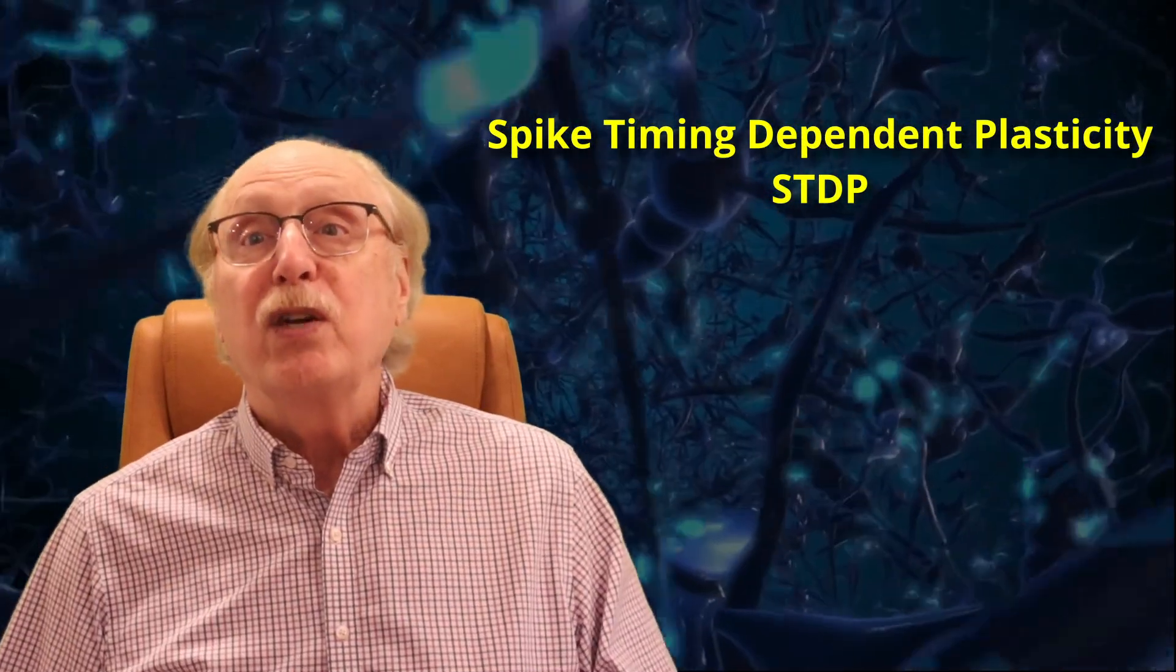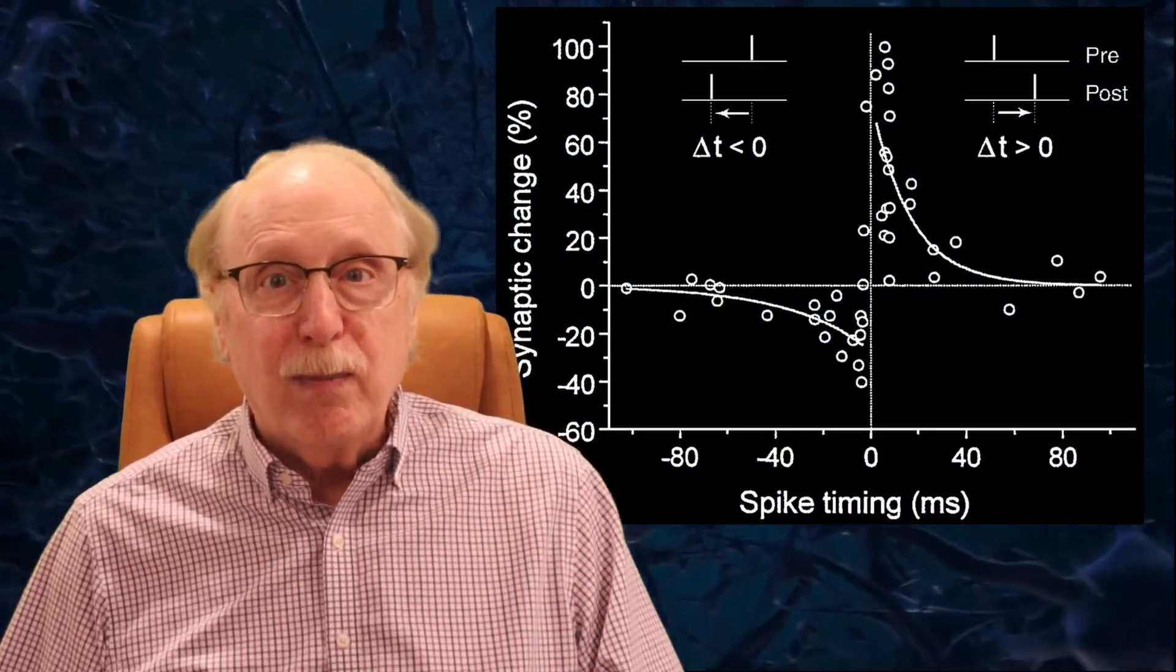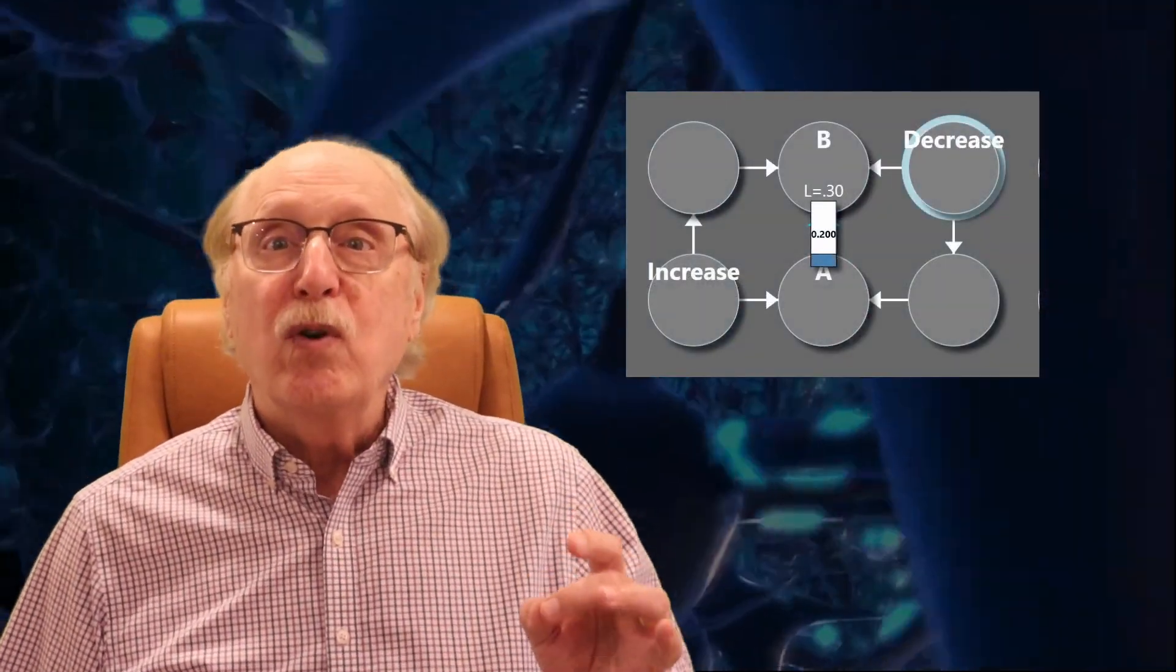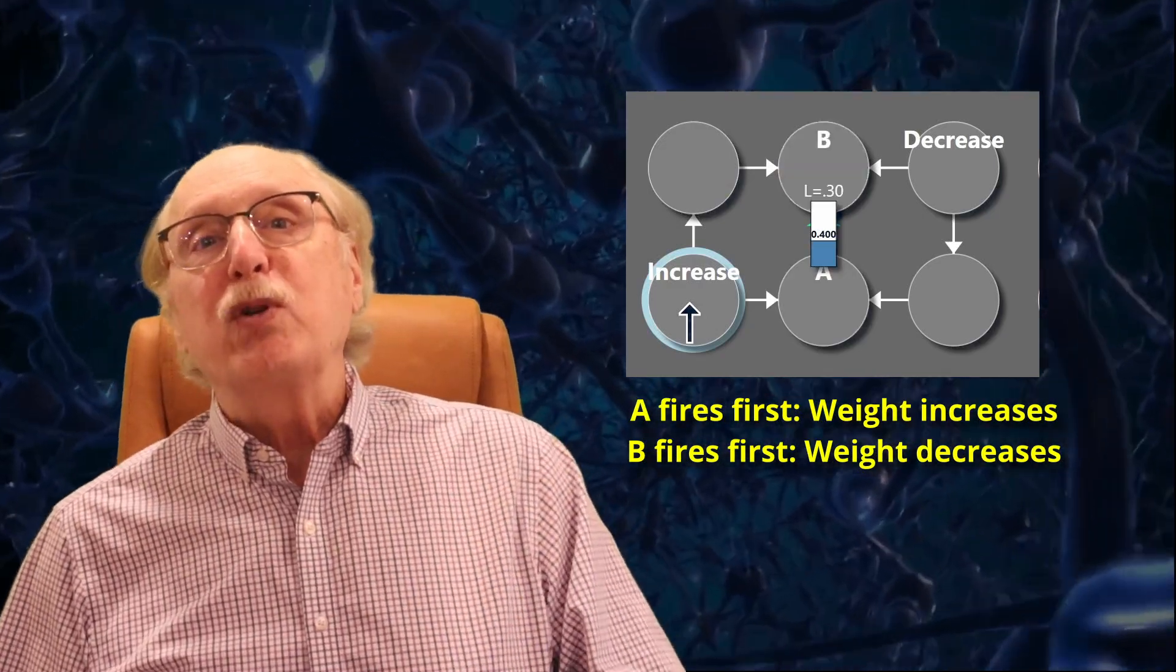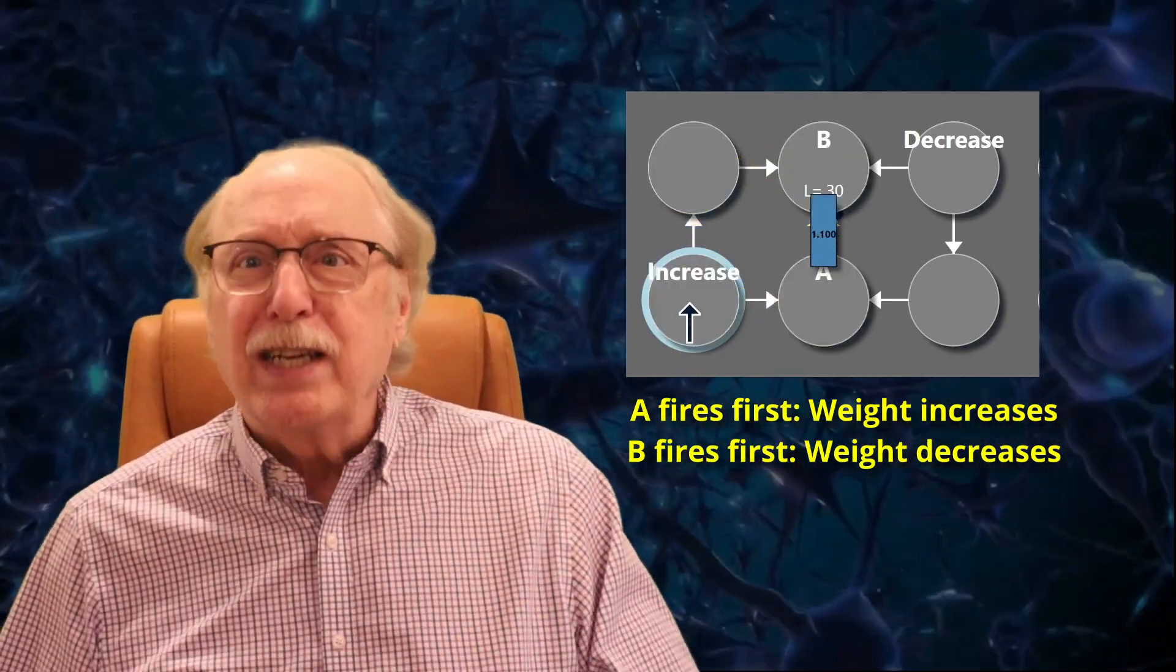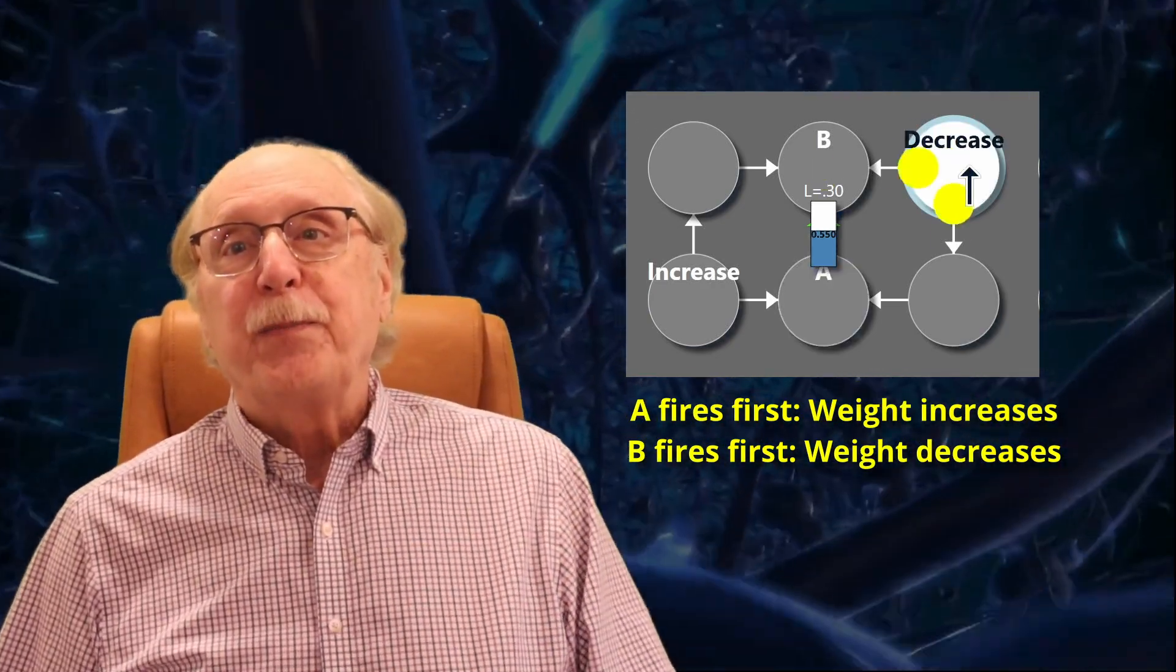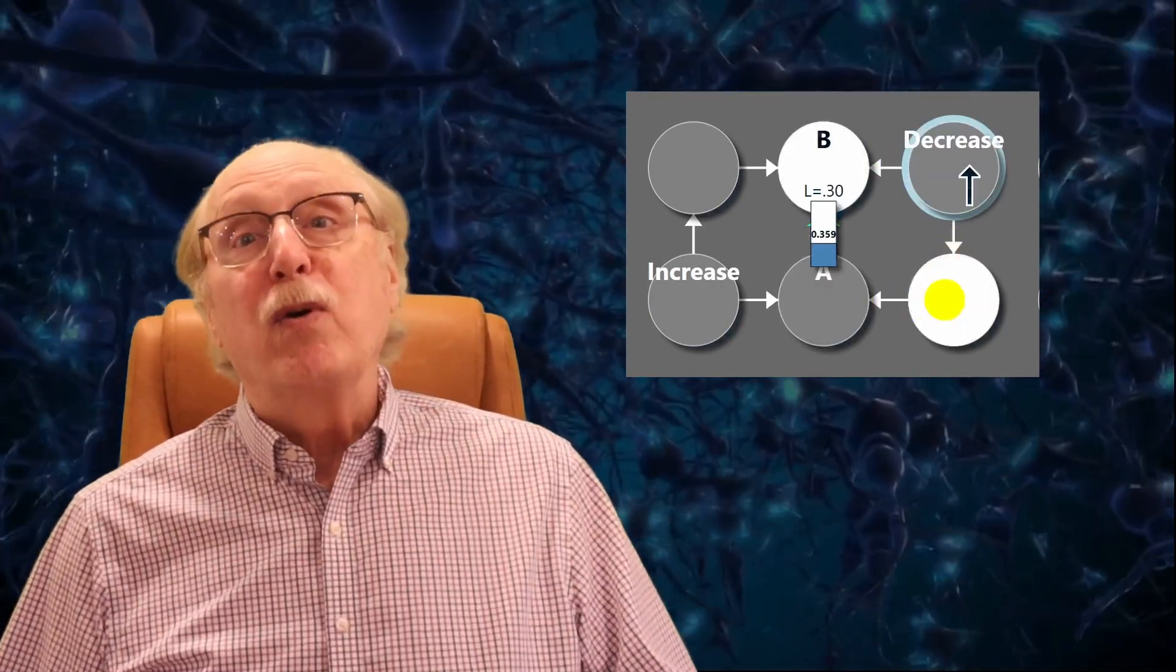This refinement is formalized into the more biologically plausible rule of spike-timing-dependent plasticity, or STDP, in which the precise timing between presynaptic and postsynaptic spikes determines whether a synapse is strengthened or weakened. STDP captures some details. If neuron A fires before neuron B by a few milliseconds, the synapse is strengthened. If A fires after B, it is weakened. However, even this model, though useful, fails to fully account for the complex realities of how synaptic learning occurs in the brain.